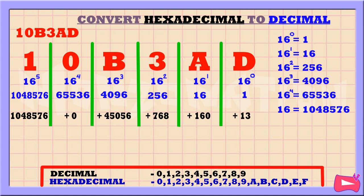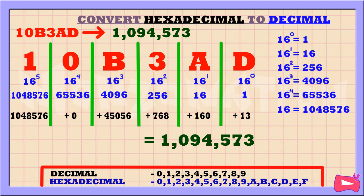Let's add up these numbers. 1,048,576 plus 0 plus 45,056 plus 768 plus 160 plus 13 is 1,094,573. So the decimal equivalent of 10B3AD is 1,094,573.